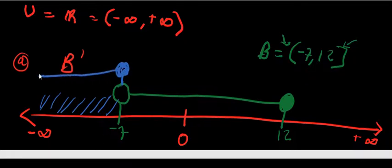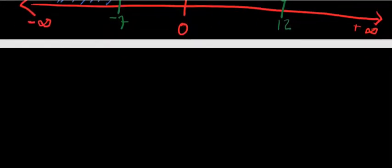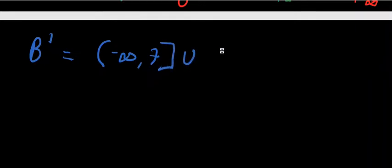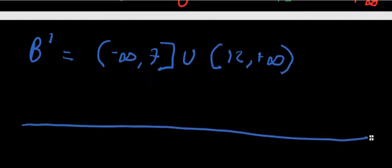We go in the direction of negative infinity. Then we check 12: it is in set B, so 12 is not in B complement, and we stop there. After doing that we can show that B complement is simply equal to open bracket negative infinity comma negative 7 close block bracket, union, open bracket 12 comma positive infinity open bracket.